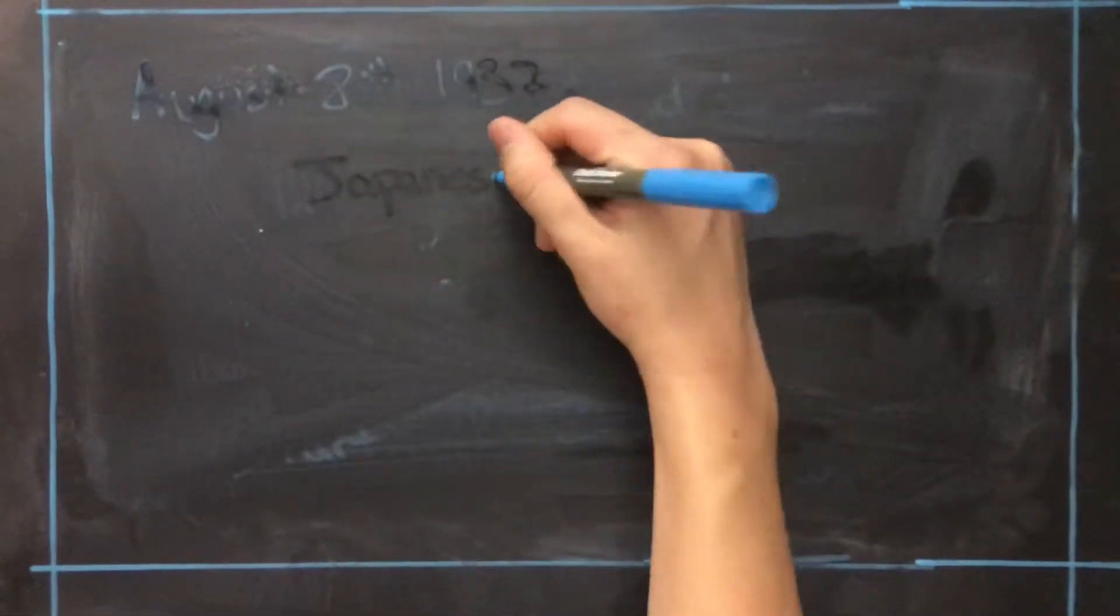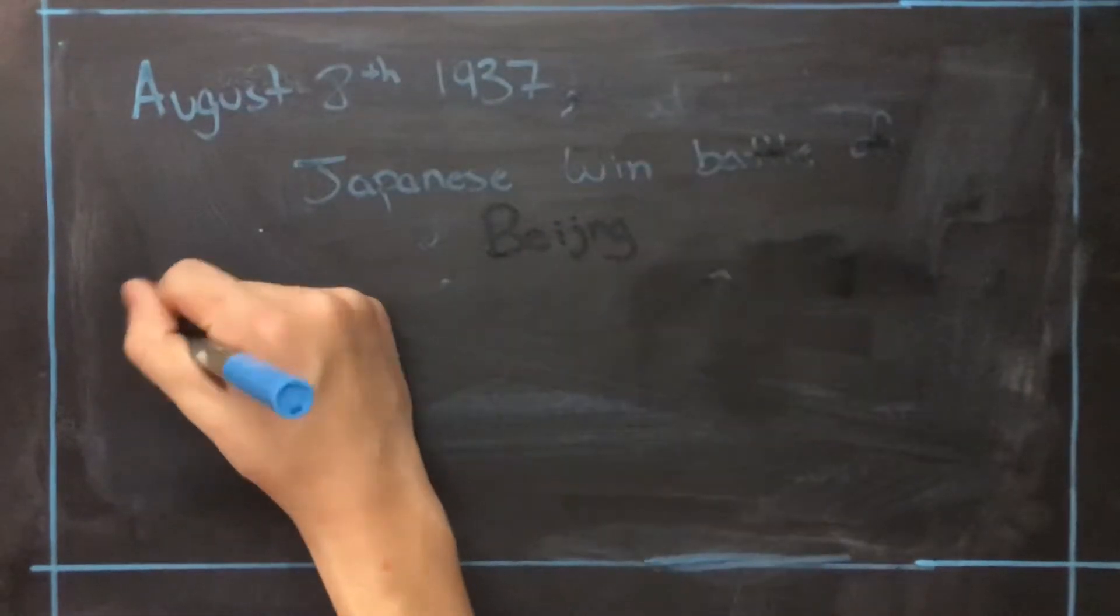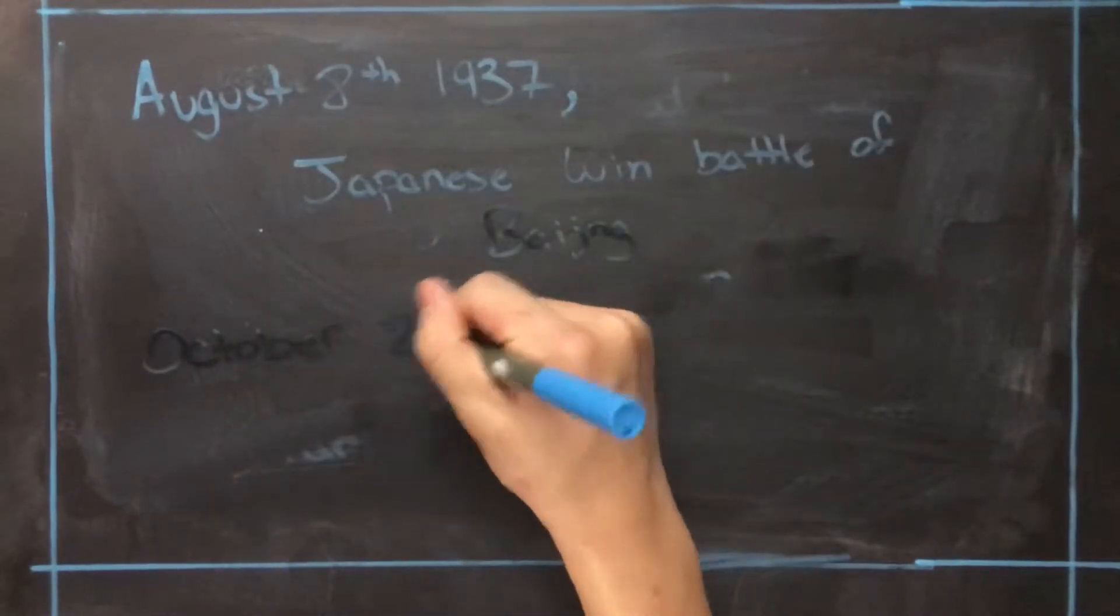After this battle, the Japanese army continued down the eastern coast of China, eventually conquering Shanghai on October 26th, 1937.